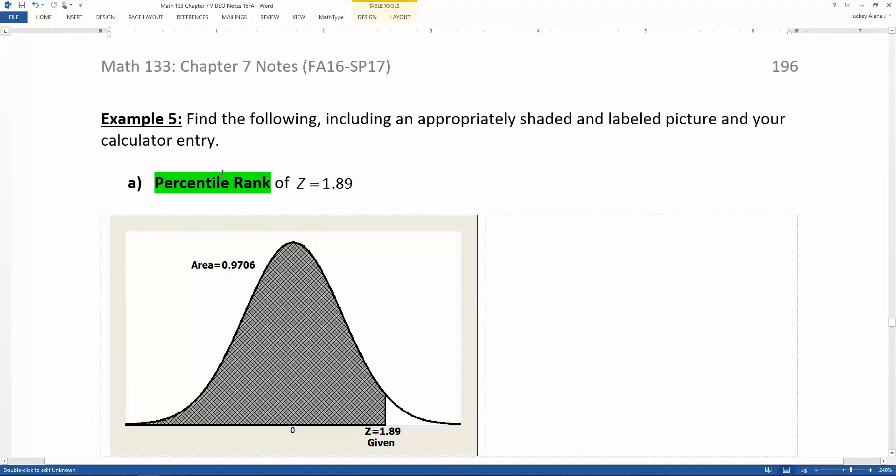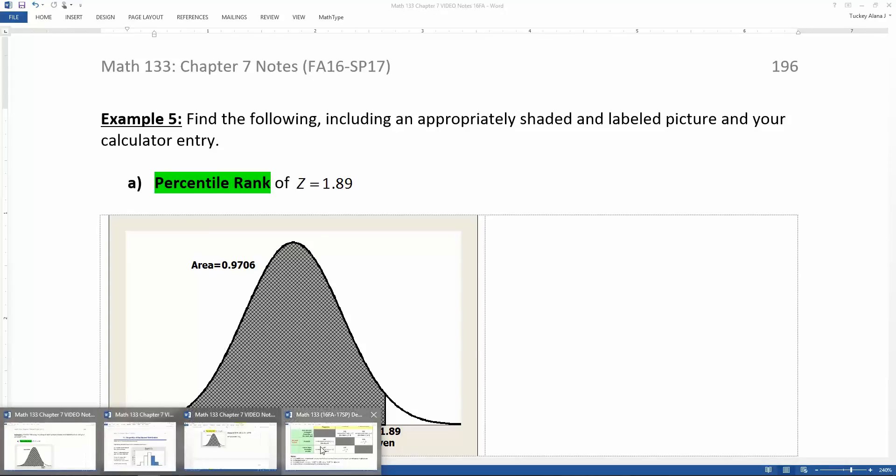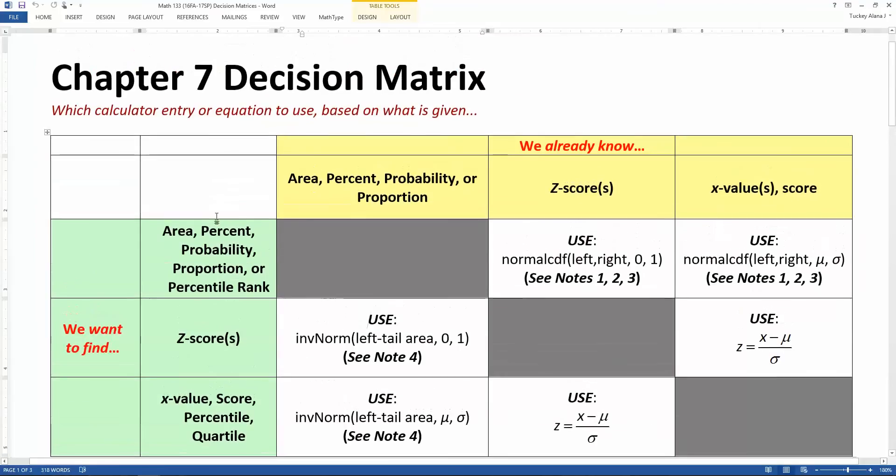So the first thing it wants to know is the percentile rank of z equals 1.89. Now you notice earlier in the problem, it doesn't say anything about the standard normal distribution, but I don't need to. Once you see a z in the problem anywhere, it has to be the standard normal distribution. That's what the z curve is. So it says this magical word percentile rank.